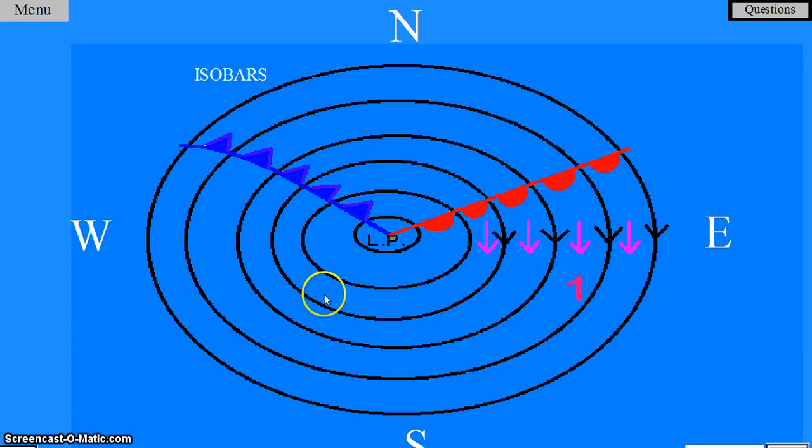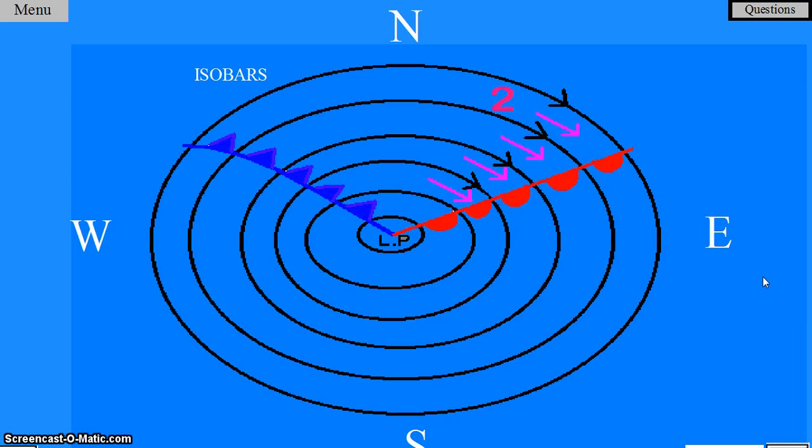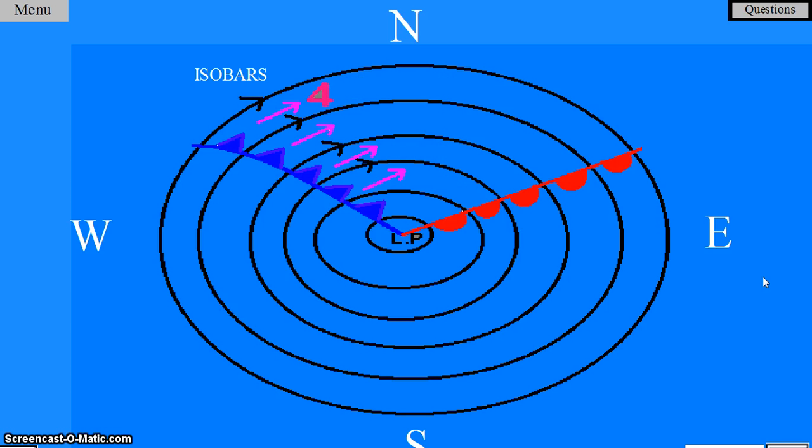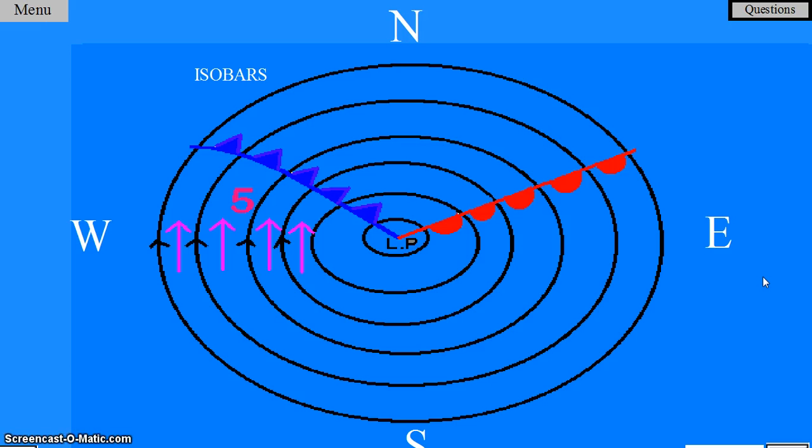As the cold front or temperate cyclone moves over an area, the wind direction will change from a northerly wind to a northwesterly wind to a westerly wind and ultimately to a southerly wind.